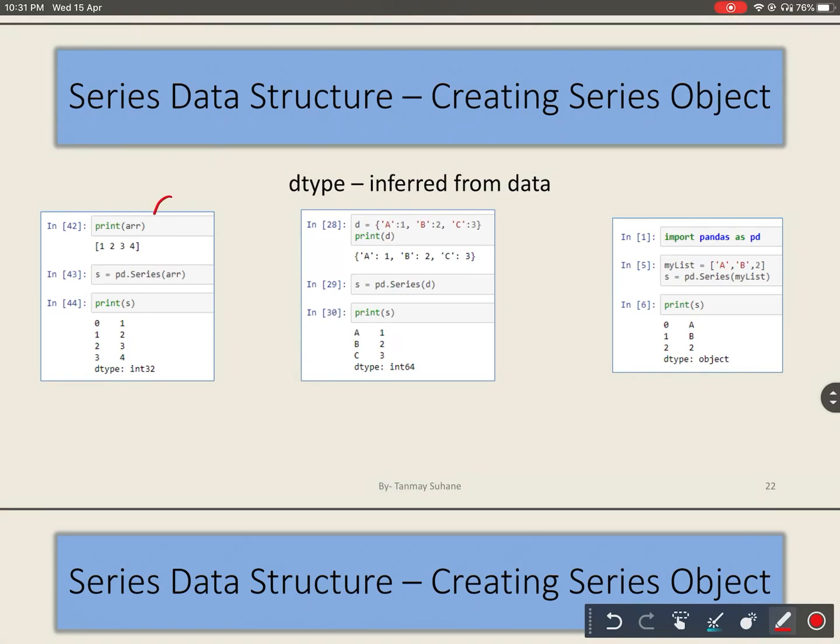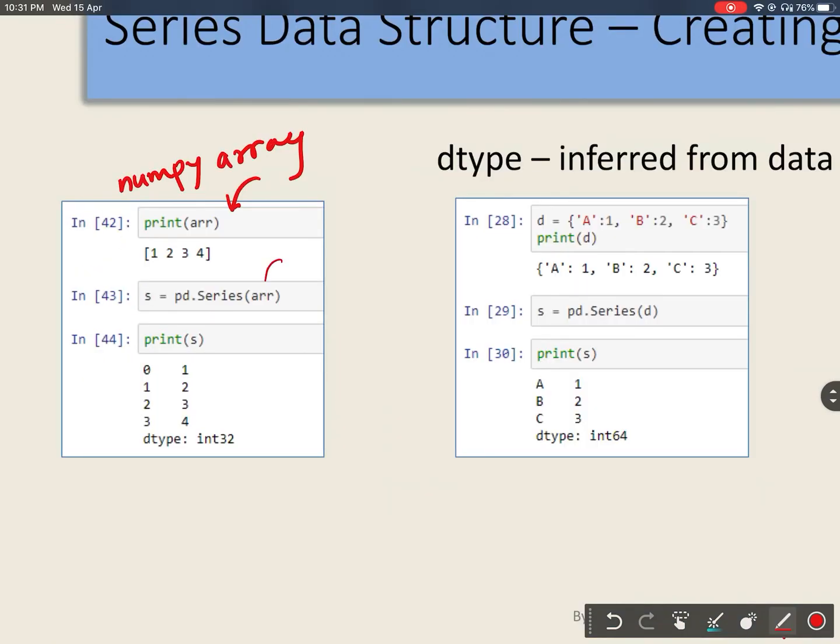Consider this example. In this example arr is a numpy array and we are creating series from numpy array. So if you can see, these are the indexes and these are the data of series object. So we can see the data type of these data is int32. That means Python has automatically taken int32.